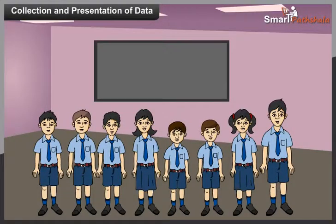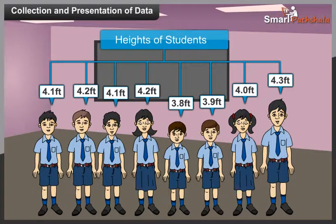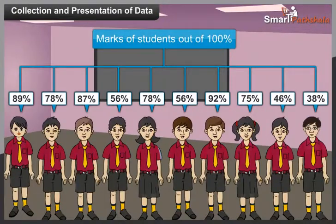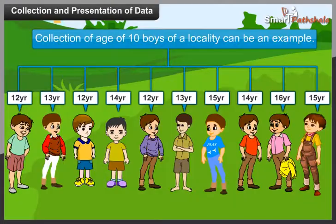We can collect data from various places. For example, we can collect the heights of all the students of the class by measuring their heights. Another example could be collecting the marks of all the students of the class. One more example could be the weights of all the students of a class, or the ages of 10 boys of a locality.